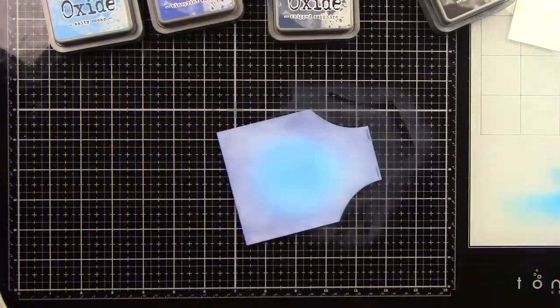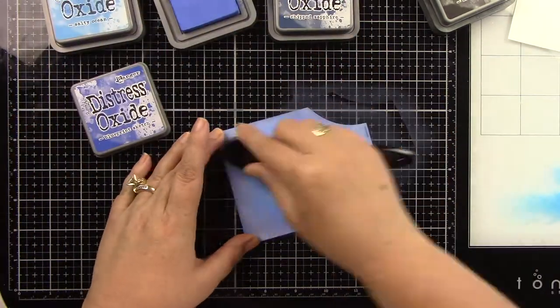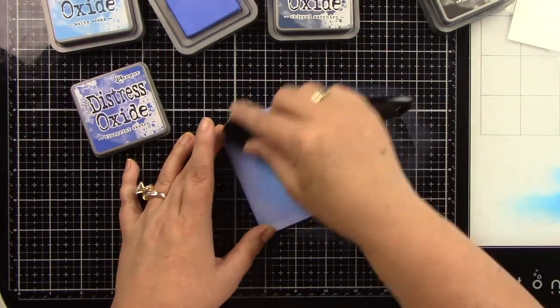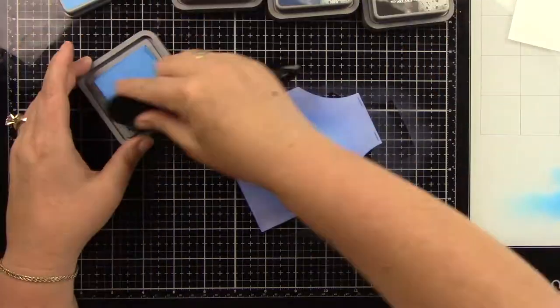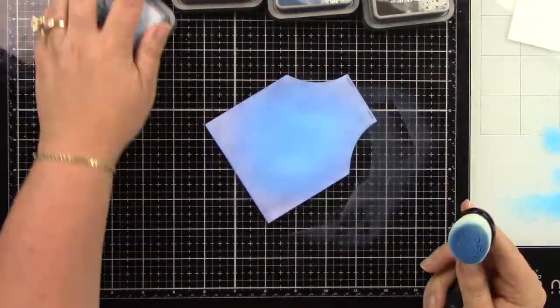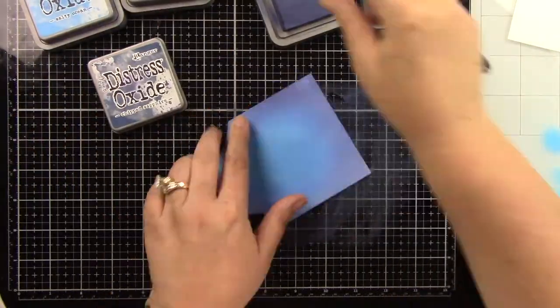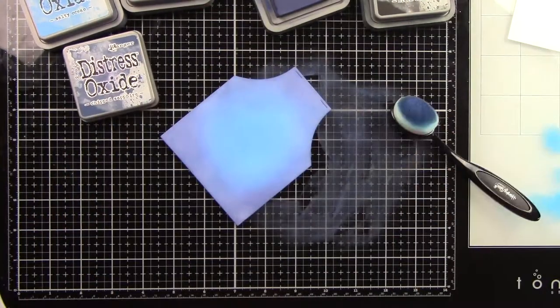I'm starting in the center with my lightest color, Salty Ocean. Then I'm coming in with the Blueprint Sketch and working my way out. I want to get a good blend between those two, then I'm going to use the Chipped Sapphire.